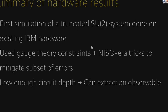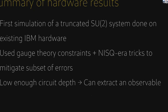To summarize those results, that's the first simulation of a highly truncated SU(2) system, which was done on existing IBM hardware, used gauge theory constraints and NISQ-era appropriate protocols to mitigate at least some subset of the errors, the most obvious ones that could be fixed. For low enough circuit depth, because number of trotter steps corresponds to the depth of the circuit, we were able to extract an observable successfully.